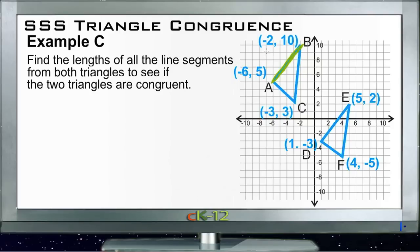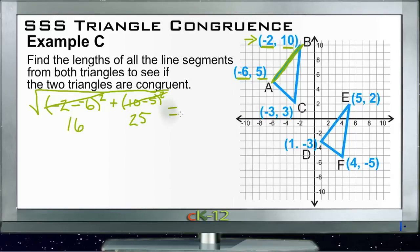AB has x-coordinates of -2 and -6, and y-coordinates of 10 and 5. Using the distance formula, we take the square root of the difference in our x terms: (-2 - (-6))² plus the difference in our y terms: (10 - 5)². That gives us (-2 - (-6))² which is 4² or 16, plus (10 - 5)² which is 5² or 25. The square root of 16 + 25 equals the square root of 41, so side AB is √41 units.